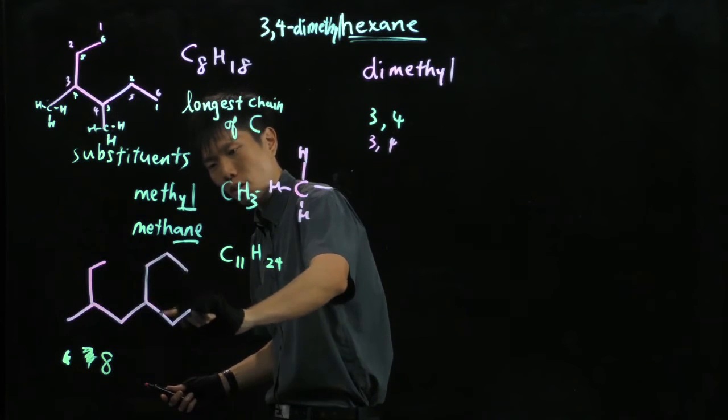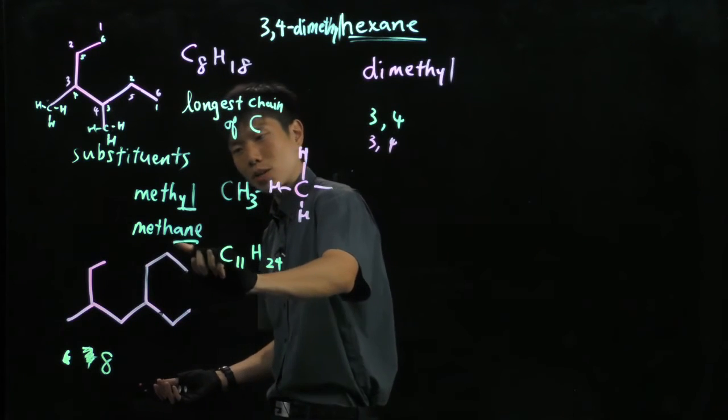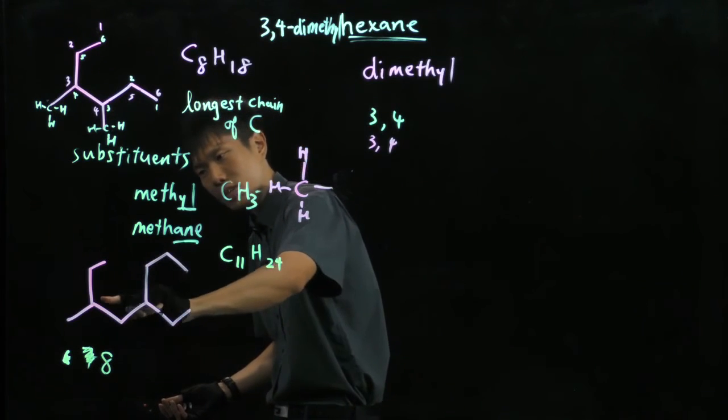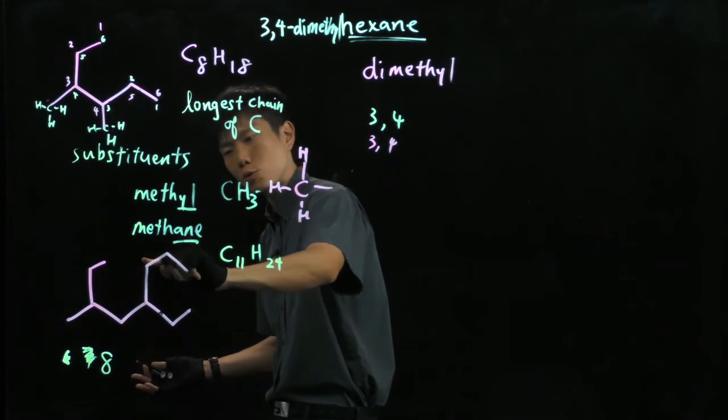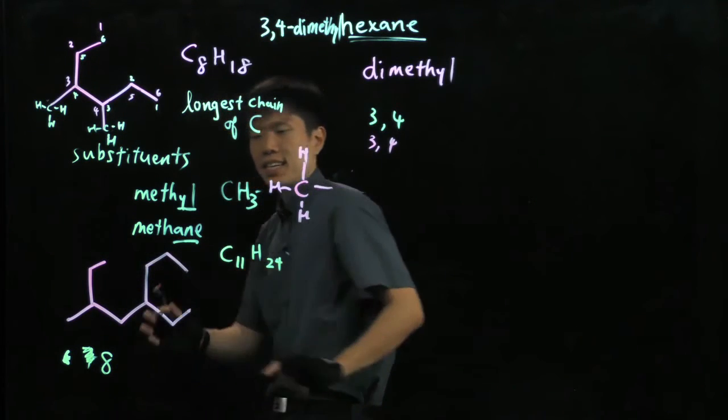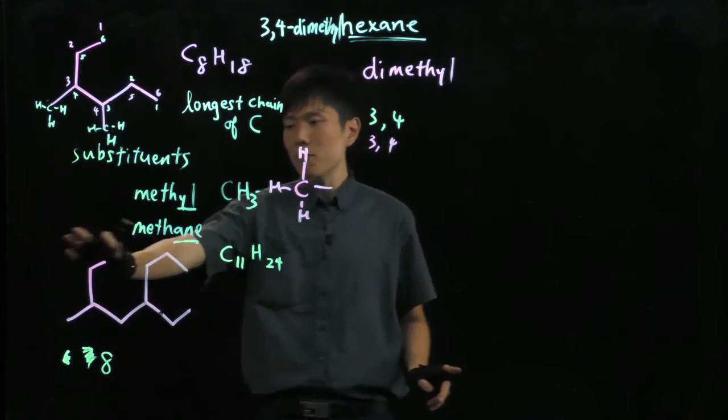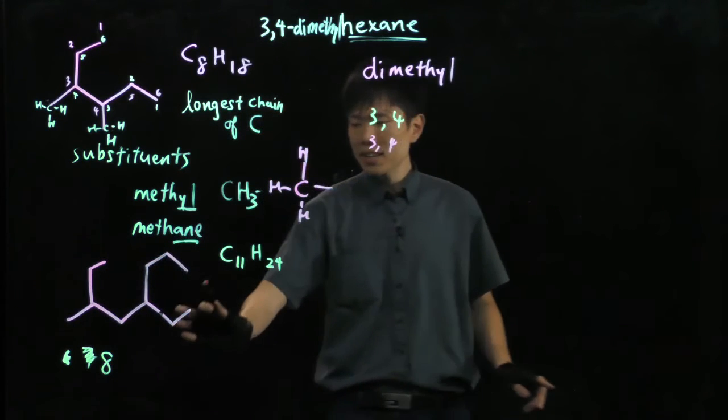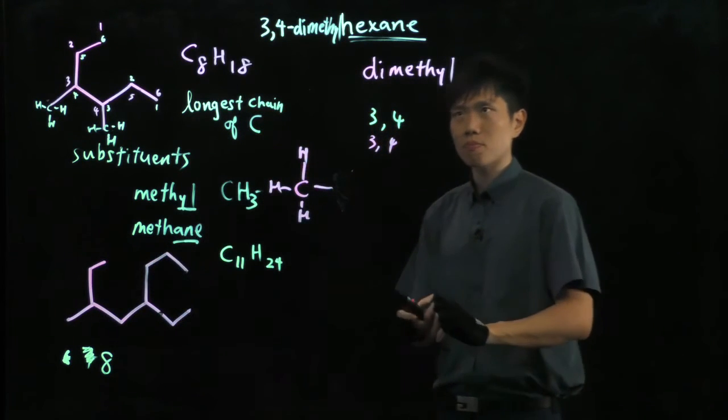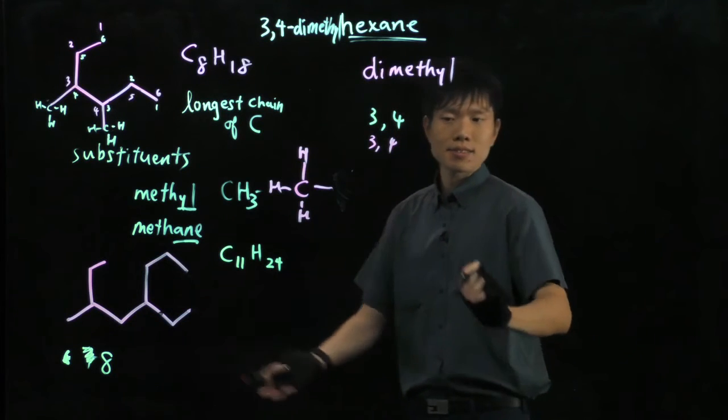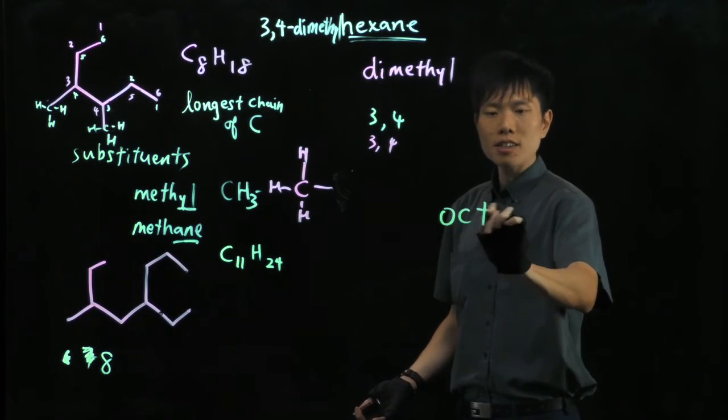1, 2, 3, 4, 5, 6. No good. 1, 2, 3, 4, 5, 6, 7. No good. 1, 2, 3, 4, 5, 6, 7, 8. It is the same path as where we come from just now for 8. So 8 must be our parent name. Eight-carbon alkane, octane.